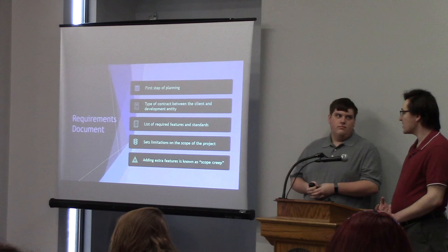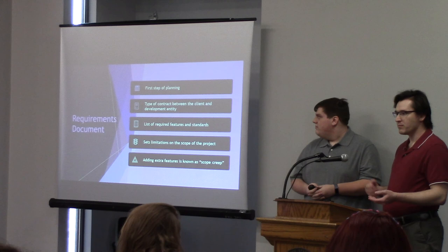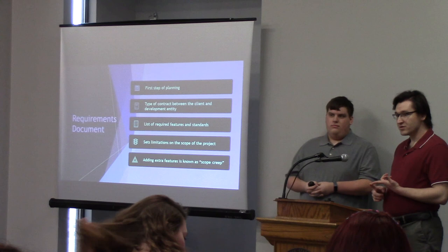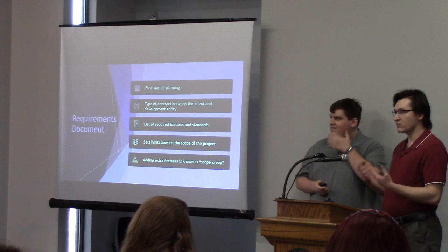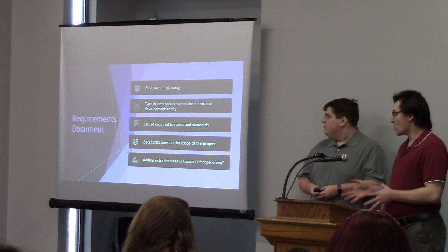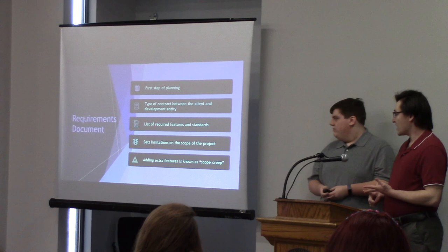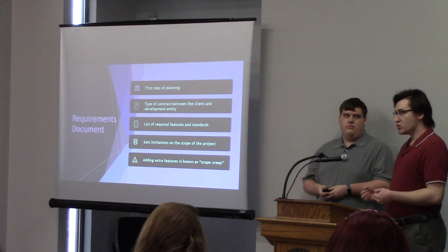The first thing we want to talk about is a requirements document. This was the first step of planning for us, and it's kind of like a contract between you and the person you're making your software for. You put all the required features and standards there, set limitations on the scope of the project. Adding extra features is actually a no-no — this is known as scope creep, and you're technically breaching your contract.